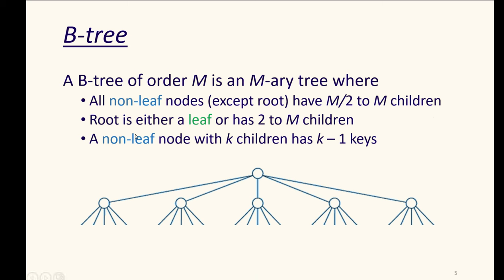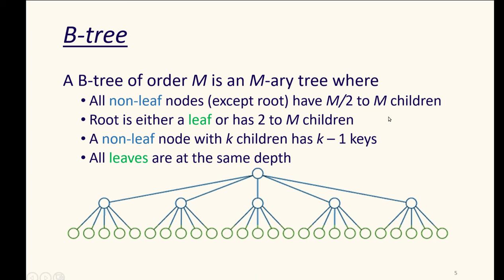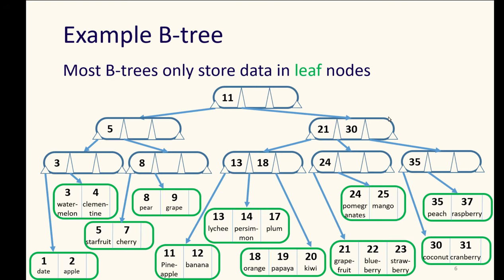And a non-leaf node with K children has K minus one keys as well. So we're not just doing a left or right. We need to make a choice of, does this go slotted toward my first child, second child, third child, etc. To do that, we're going to need to have K minus one keys. In other words, we will have at least one key to split up possibly two children out to M minus one keys to be able to split out M children in those different directions. All leaves are at the same depth. We keep them all at the same depth so that we don't have this difference in height between them.